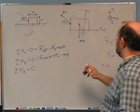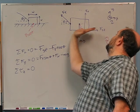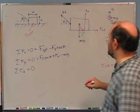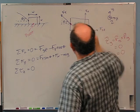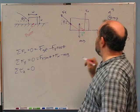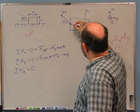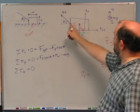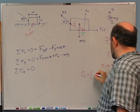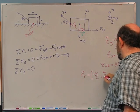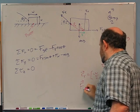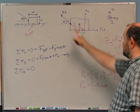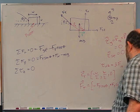The torque due to the normal force is L in the x direction crossed with Fn in the y direction, giving L times Fn. For the tension torque, the vector RT from the pivot to where tension acts goes minus W over 2 in x and plus W over 2 in y. The tension force FT is minus Ft cosine theta in x and plus Ft sine theta in y, and zero in z. Using the cross product matrix method to find the z-component of the torque due to tension.